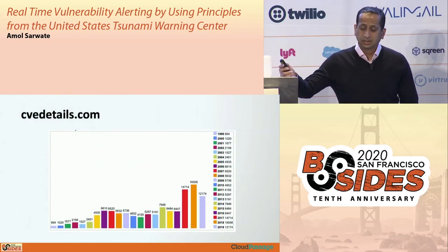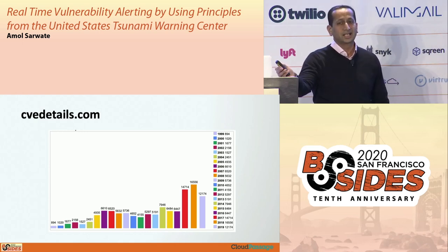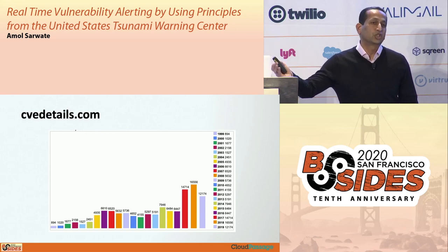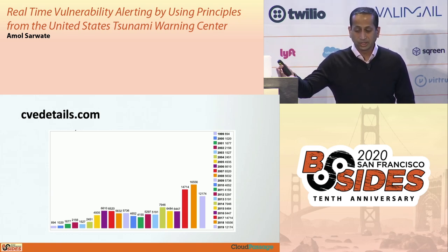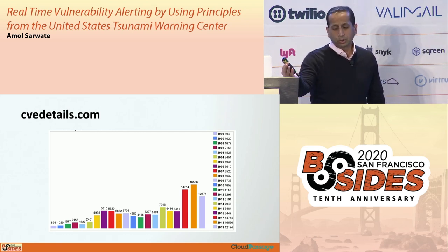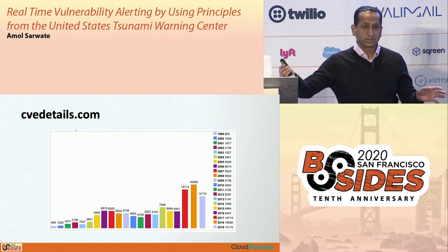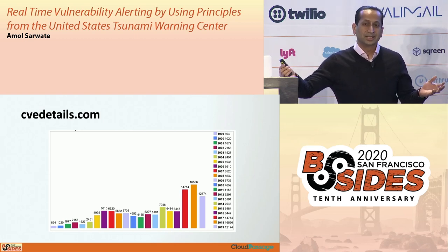This is a slide from cvedetails.com. A CVE is essentially a unique identifier given to a vulnerability. On the right-hand side is 2019, last year, where according to them there were about 12,000 unique vulnerabilities. These are just unique vulnerabilities - one of these can be used by many proof of concepts, exploits, viruses, and malware. It gets multiplied quickly by the amount of bad things happening, and then further multiplied by the hundreds and thousands of assets in your organization.